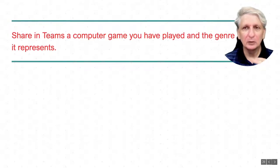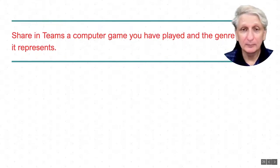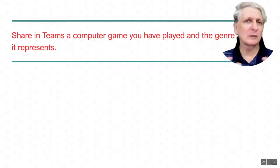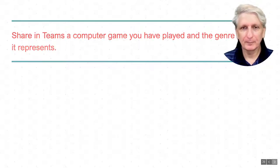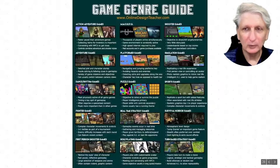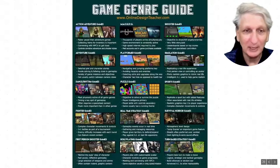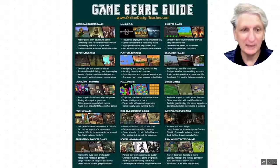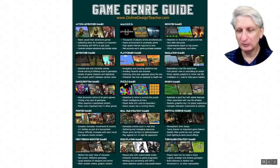Share in the Microsoft Teams a game that you have played recently — a computer game — and the genre that it might represent. Here is a guide to some of the genres we're going to explore in more detail at the end of this presentation. We've got things such as action adventure games, simulation games, puzzle games, sports games, real-time strategy games, survival horror games, and so on. There's a range of different types of computer games.